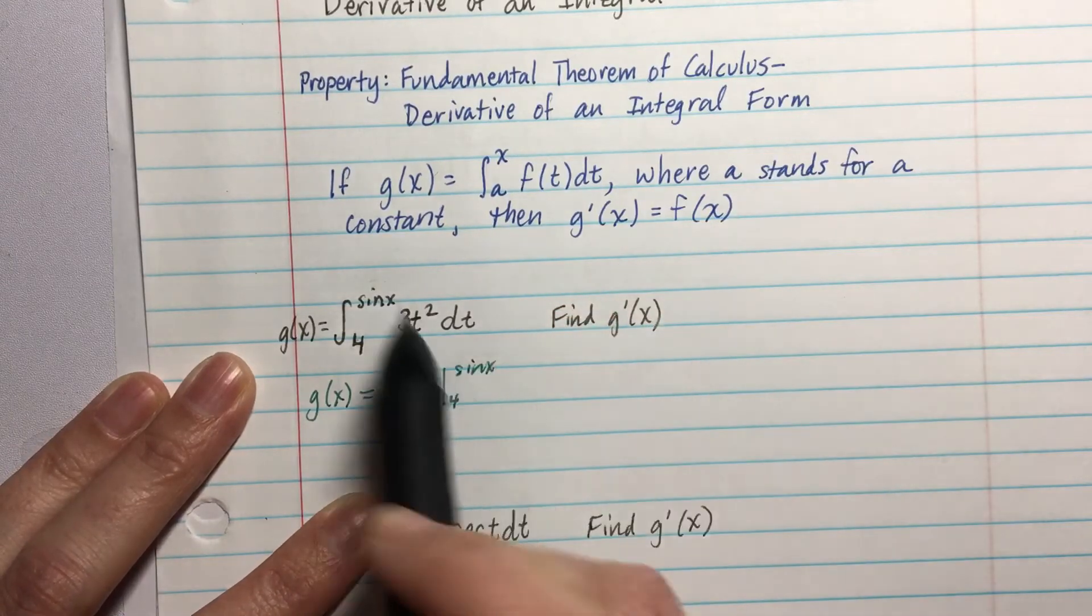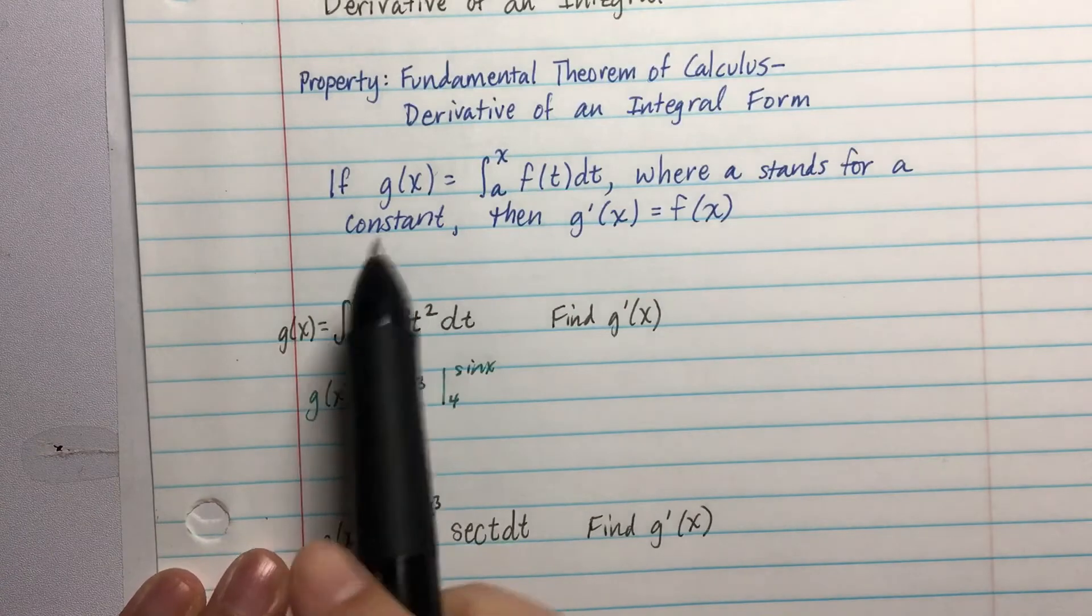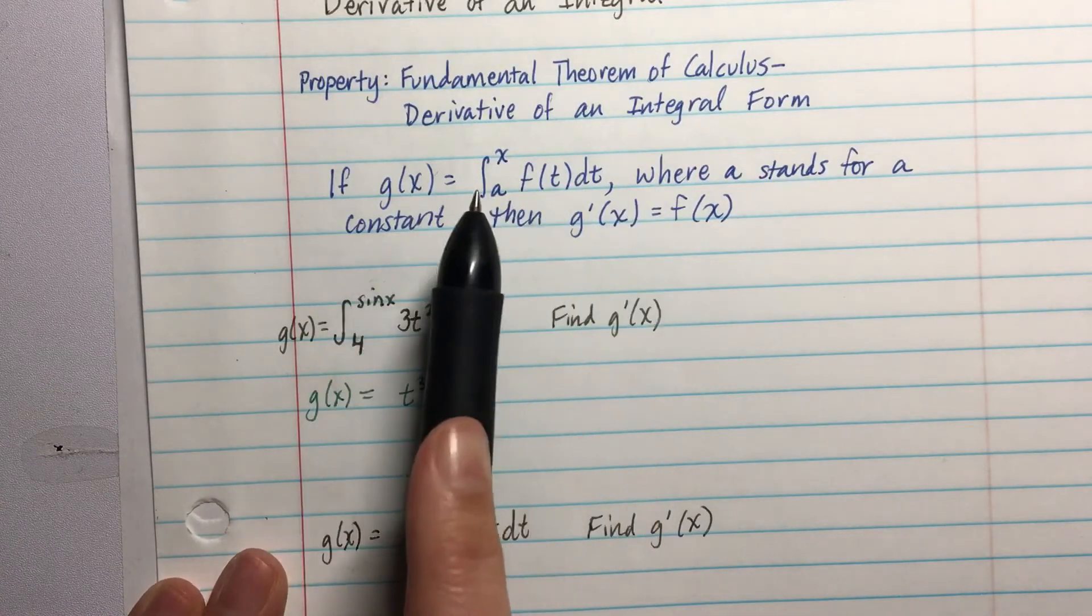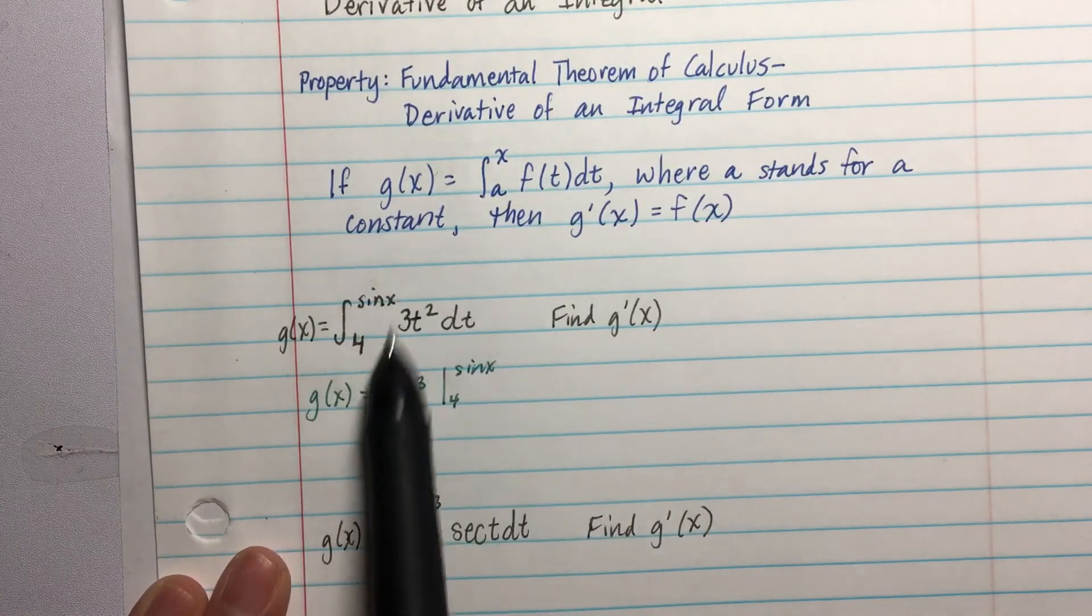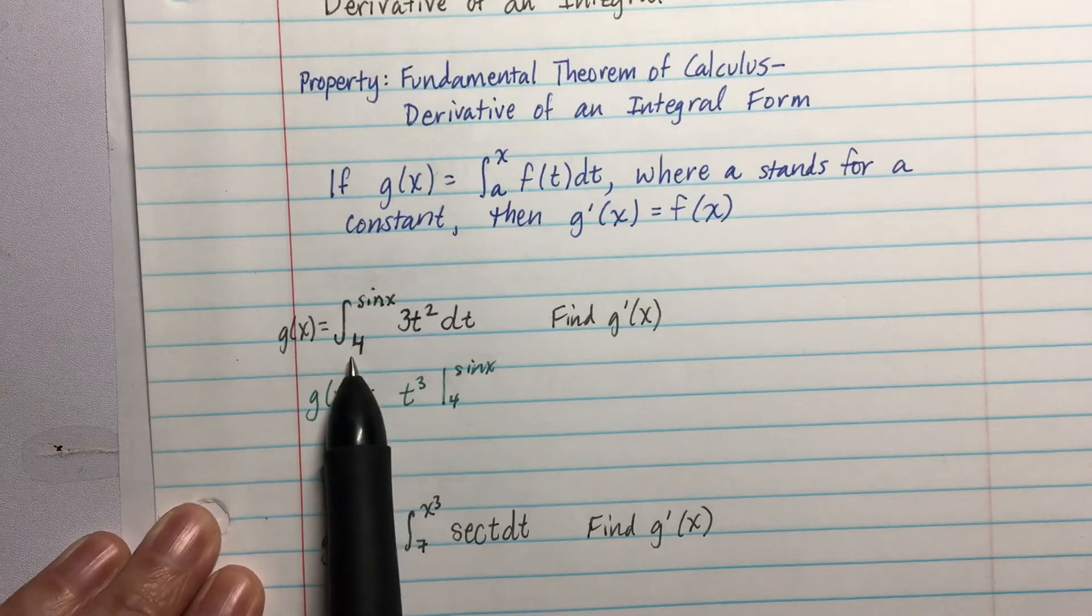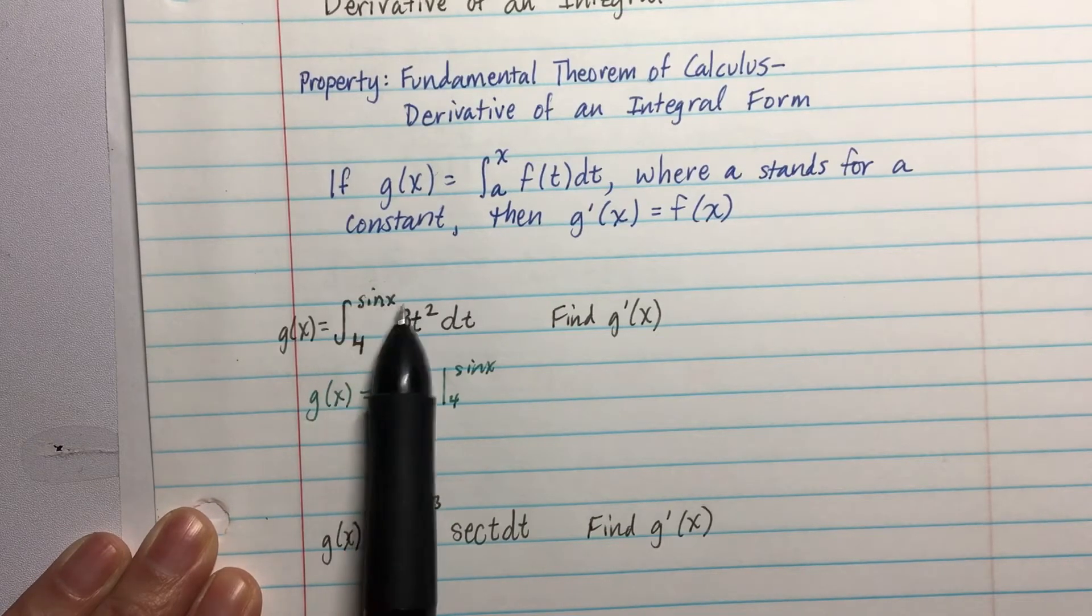In case you're wondering, by the way, about the fact that we're going to a function at the top, for whatever reason, this derivative of an integral form always is going to look like this: a number for the lower bound and some sort of function on the upper bound.